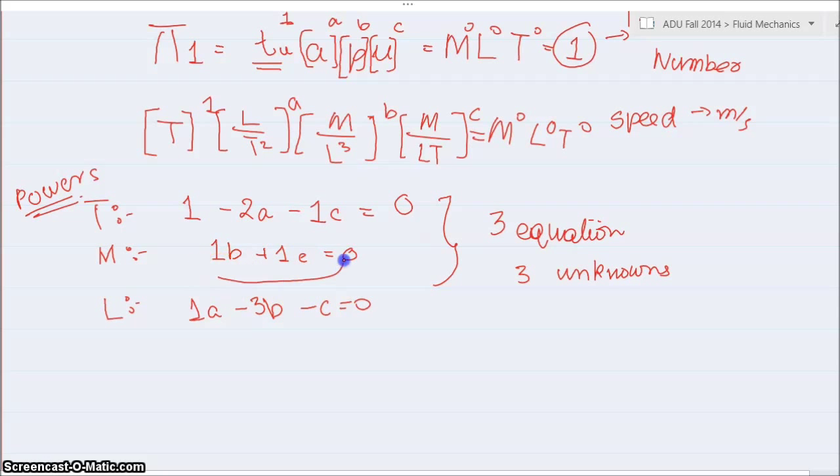We can say first from this equation that b is equal to minus c. Because if I bring this to the other side, I can get b is equal to minus c.